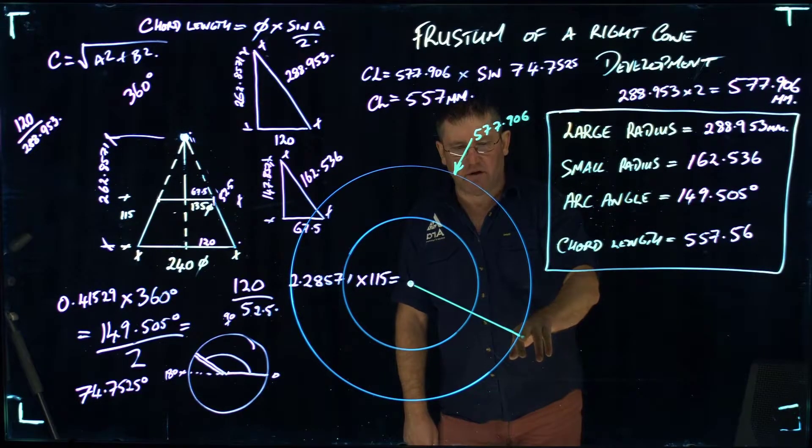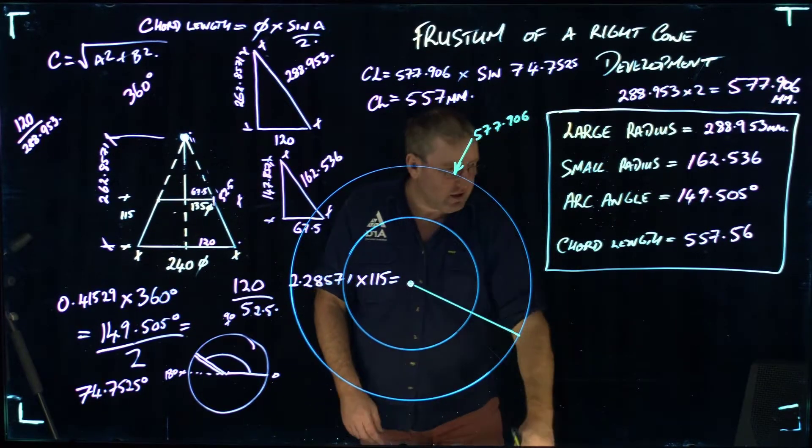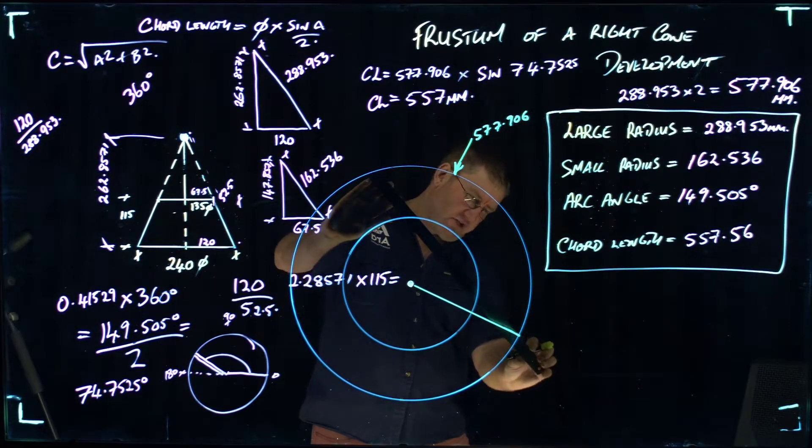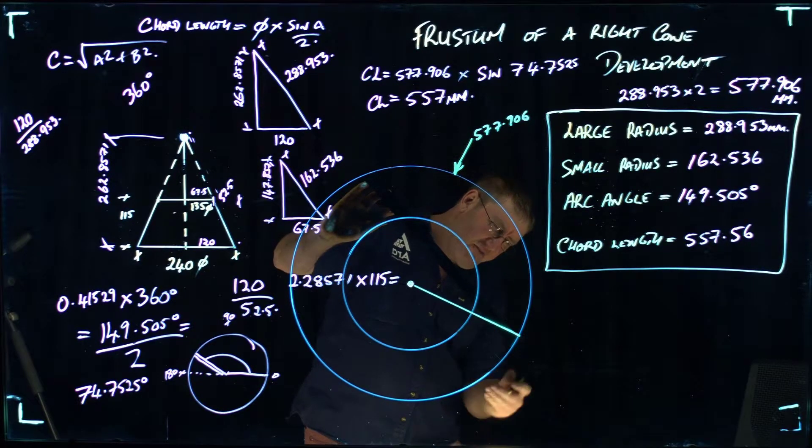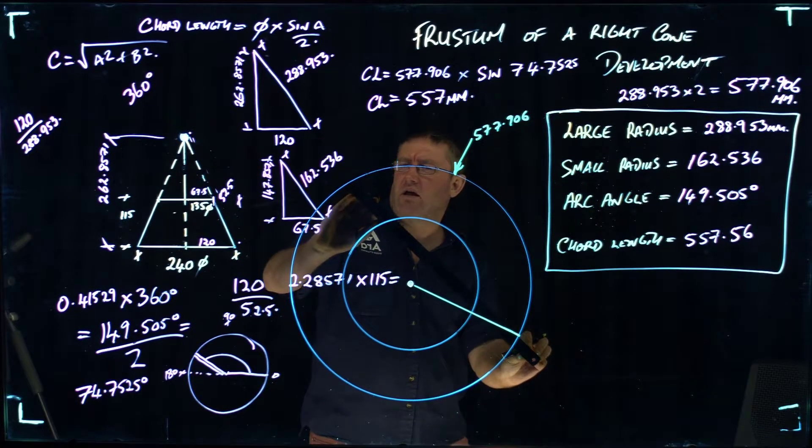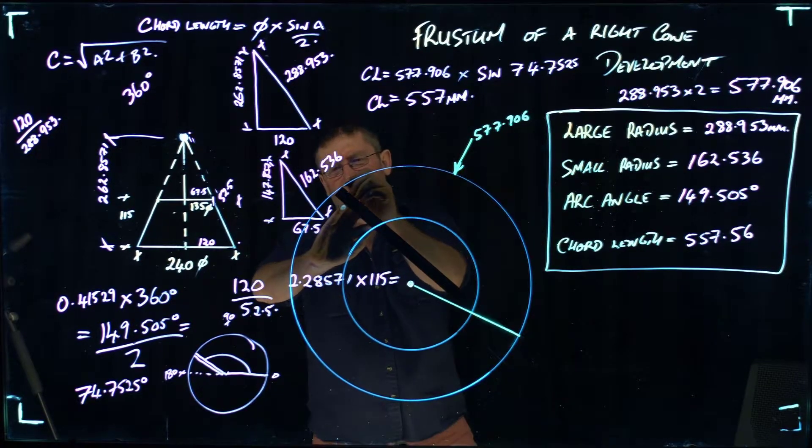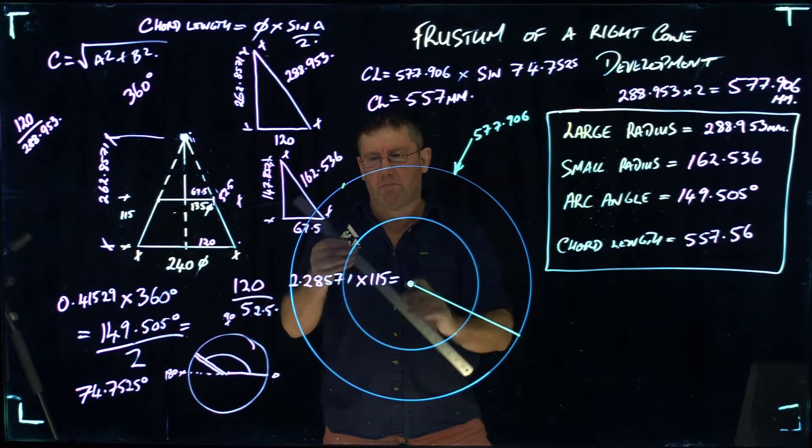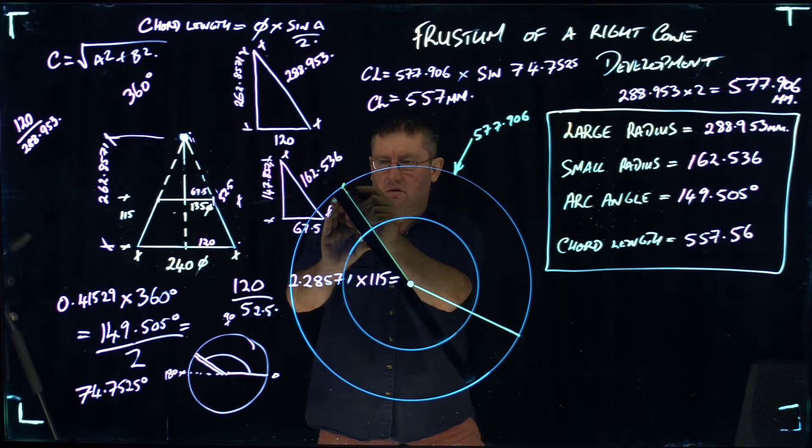We need to put in a chord length. This being a start point. A chord length is a straight line across a circle. I'm just going to measure it because my compass doesn't go out. My dividers don't go out to that length. From here, I'm going to measure from this point, 557 millimeters. So it's that point there. From that point on the circle, I'm going to run back to this point here, to the centre of the circle.